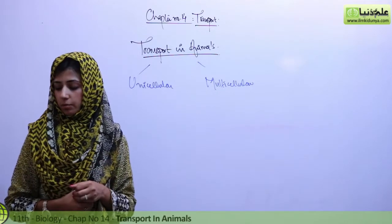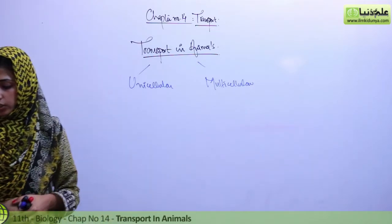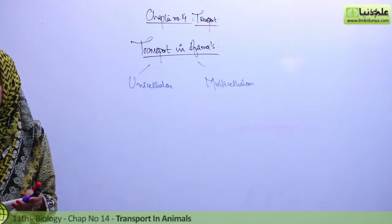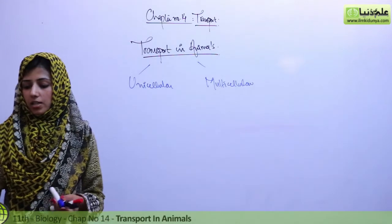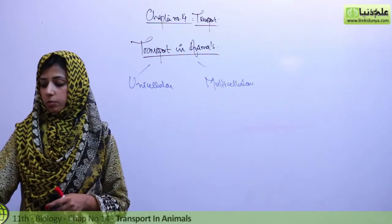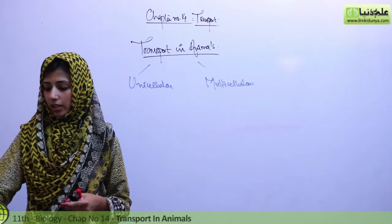In the case of unicellular, we are having very simple processes like simple diffusion, osmosis, active transport, facilitated diffusion. These are all terms that we discussed. No special transport systems are involved, highly organized.